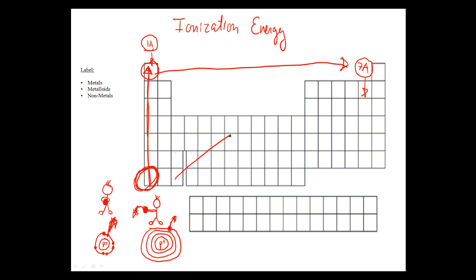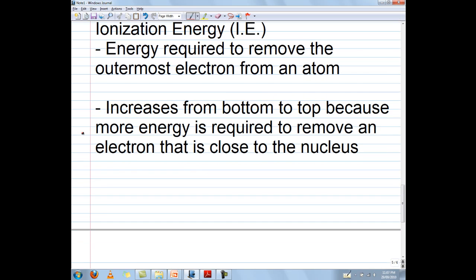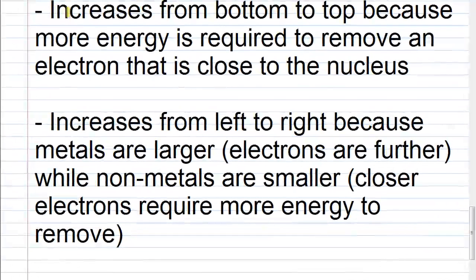The overall trend for ionization energy is in this direction — the largest atom requires the least amount of energy to rip off the outermost electron, whereas the smallest atom over here requires the most energy to rip off the outermost electron. So to recap: ionization energy increases from bottom to top because more energy is required to move an electron closer to the nucleus, and the smallest atoms are at the top. Ionization energy also increases from left to right because metals are larger and electrons are further away, while non-metals are smaller so electrons are closer and require more energy to remove.